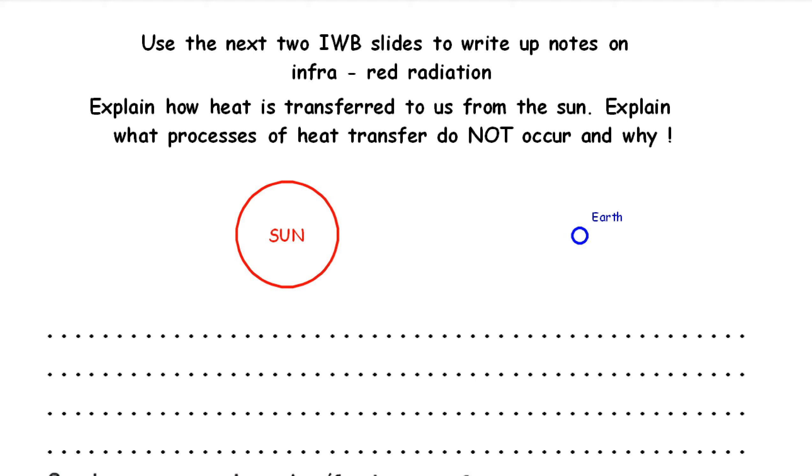Hello Year 10s, this is Lesson 6 from the 1.3 booklet Making Use of Energy. We don't actually have the interactive whiteboard slides, but we don't need them. Explain how heat is transferred to us from the sun. Explain what processes of heat transfer do not occur and why.